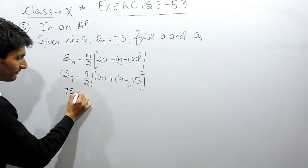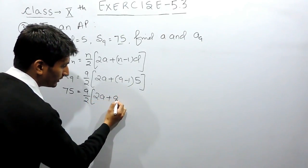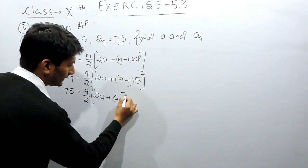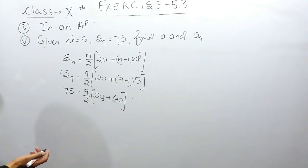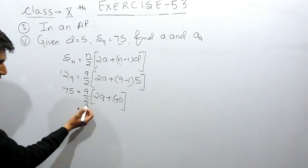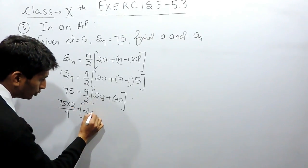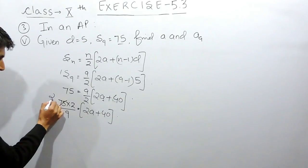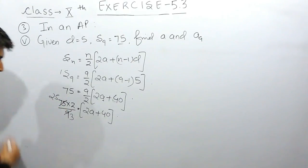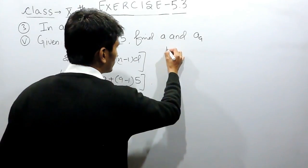Substituting the values, in place of the sum I write 75. Then 9 minus 1 equals 8, and 8 multiplied by 5 equals 40. Now solving this equation I cross-multiply, giving 75 multiplied by 2, whole upon 9, equals 2a plus 40. This simplifies: 75 and 9 can be cancelled — 25 times and 3 times — giving 50 upon 3.